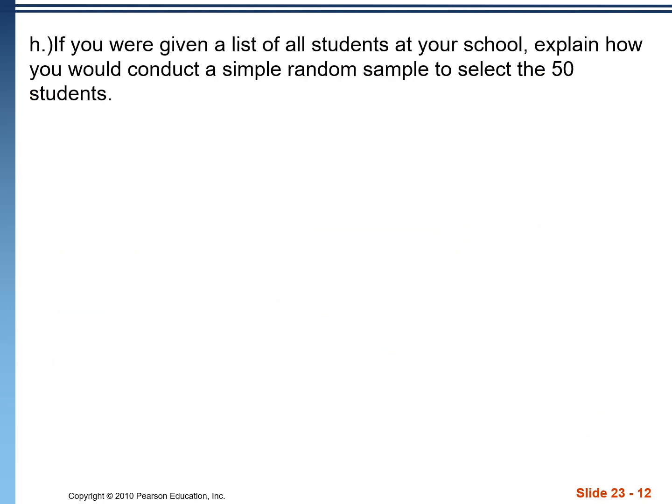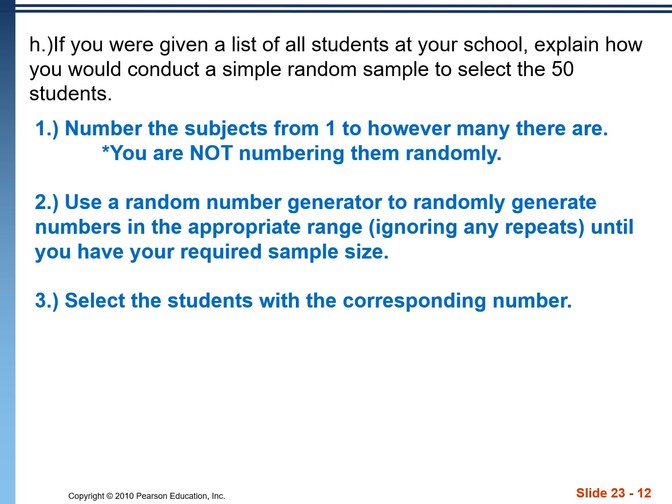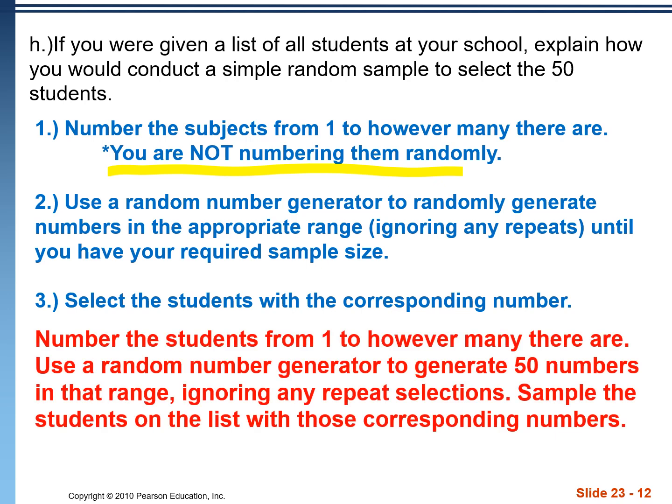If you were given a list of all students at your school, explain how you would randomly select 50 of them for a sample. Anytime you're asked a question like this, do it this way. First, number the students from one to however many there are — note that you are numbering them sequentially, not randomly. Second, use a random number generator to randomly generate numbers in the appropriate range, ignoring any repeats, and continue until you have the required sample size. Lastly, select the students with the corresponding numbers. So we would number the students from one to however many there are, use a random number generator to generate 50 numbers in that range ignoring any repeat selections, and sample the students on the list with those corresponding numbers.